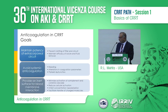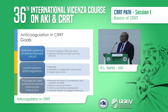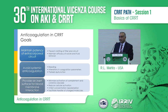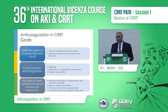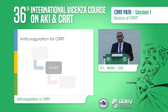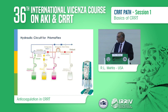To summarize the first part — why — these would be the goals overall: obviously to prevent clotting and maintain efficacy, avoid systemic anticoagulation at the same time, and also provide an inert surface for the blood-membrane interaction to occur. If those are the goals, what do we have as opportunities to achieve them in the anticoagulation cascade?